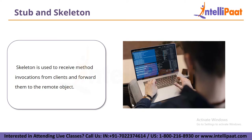On the server side, a skeleton is used to receive method invocations from the client and forward them to the remote object. The skeleton is a server-side object that listens for incoming requests from the client and dispatches them to the appropriate remote object. The skeleton is responsible for unmarshalling the parameters of the method call, invoking the method on the remote object, marshalling the return value, and sending it back to the client. Like the stub, the skeleton is generated by the RMI compiler. When the server application runs, it registers the skeleton with the RMI registry, which allows the client to locate and communicate with the remote object.